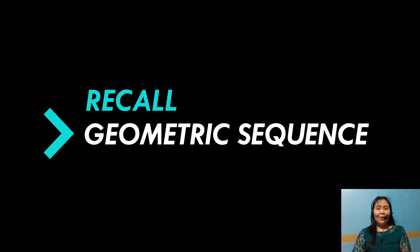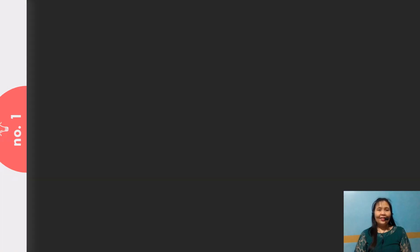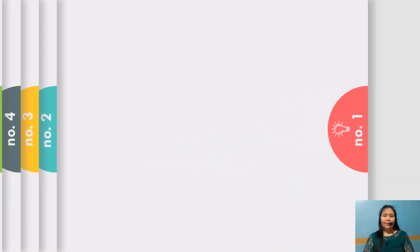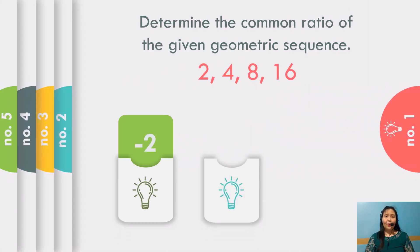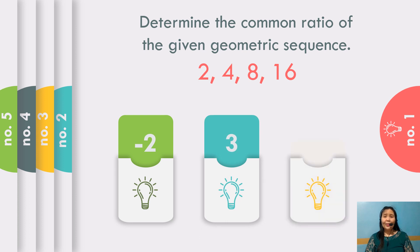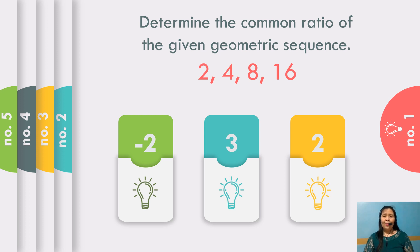Let us recall about the geometric sequence. Question number one: determine the common ratio of the given sequence 2, 4, 8, and 16. What do you think is the common ratio? Any idea?